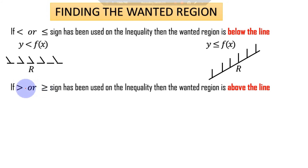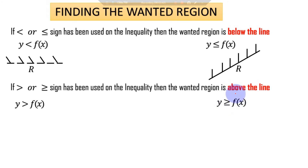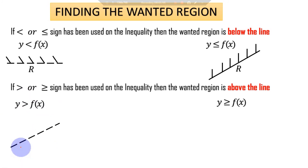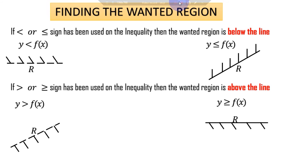For example, y greater than f(x) uses a dotted line and the wanted region is above the line, so we shade below. For y greater than or equal to f(x) we draw a solid line, the wanted region is above, and we shade below. The shaded area represents the unwanted region in both cases.